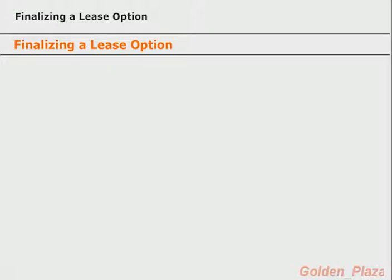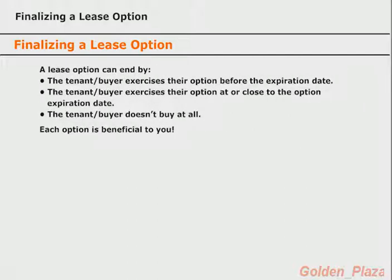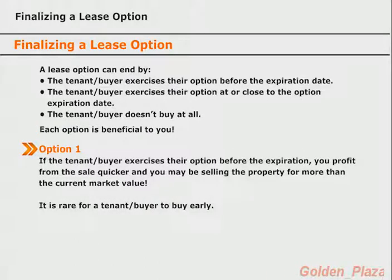Now that you have solid lease and option agreements, let's take a moment to discuss how the deal will finish. Essentially, there are only three ways the lease option can end: either the tenant buyer exercises their option before the expiration date, they buy at or around the expiration date, or they don't buy at all. All three options are beneficial to you if you took the time to set everything up correctly. You haven't required the tenant buyer to wait until the end of the lease option period to exercise their option — it really doesn't matter if they buy after one month or after two years.